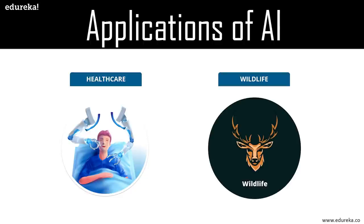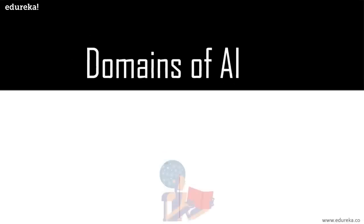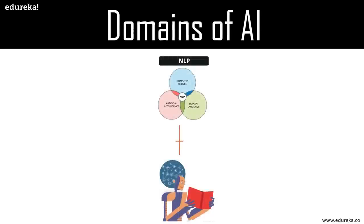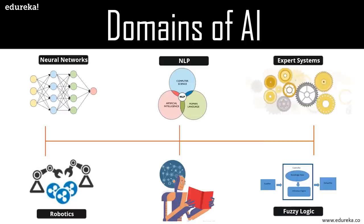Now let's look at the different domains of artificial intelligence. First, we have neural networks. Neural networks are a class of models within the general machine learning literature — a specific set of algorithms that have revolutionized machine learning and artificial intelligence. For more on neural networks, a link to the deep learning and neural networks tutorial is available in the description box below.